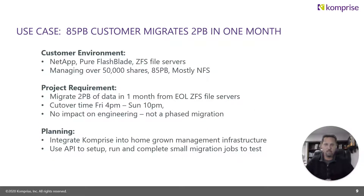This customer had 85 petabytes and we migrated two petabytes of that within a month — very efficiently, very fast, and very cost efficient. They were managing over 5,000 shares with 85 petabytes of data, the majority of which was NFS. The project requirements were to migrate two petabytes of data in one month from an end-of-life ZFS file server to a new NetApp system. The cutover window for the production outage was from Friday at 4 p.m. to Sunday at 10 p.m., with no impact on engineering and no phased migration approach allowed.